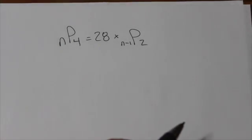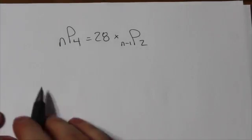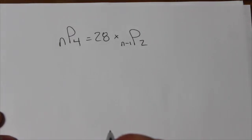Okay, hi everybody. I'd like to walk you through how to solve a permutation equation that looks something like this.